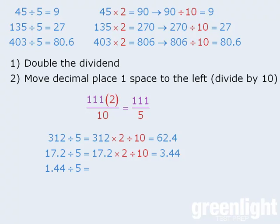I'll write one more. To divide 1.44 by 5, we first double 1.44 to get 2.88, and then we divide 2.88 by 10 to get 0.288.